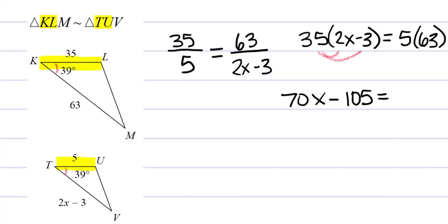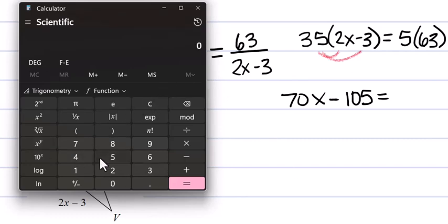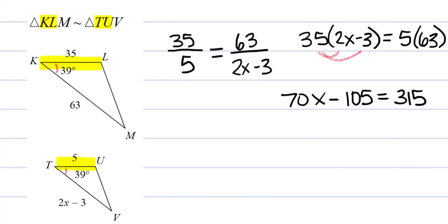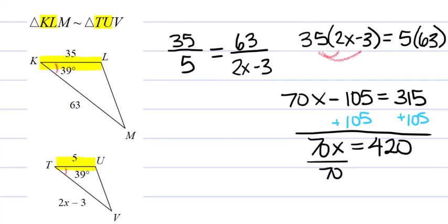And then 5 times 63 is 315. Now to solve this equation, you have to add 105 to both sides, and we're going to get 70X equals 420.